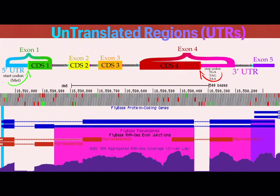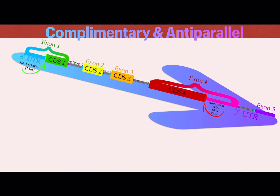It's also worth noting that some RNAs, like tRNA or rRNA, aren't meant to be translated into protein. Instead, they play structural and catalytic roles. In either case, the UTRs are crucial for proper cell function. Together, we can visualize the concept of basic gene structure and function.